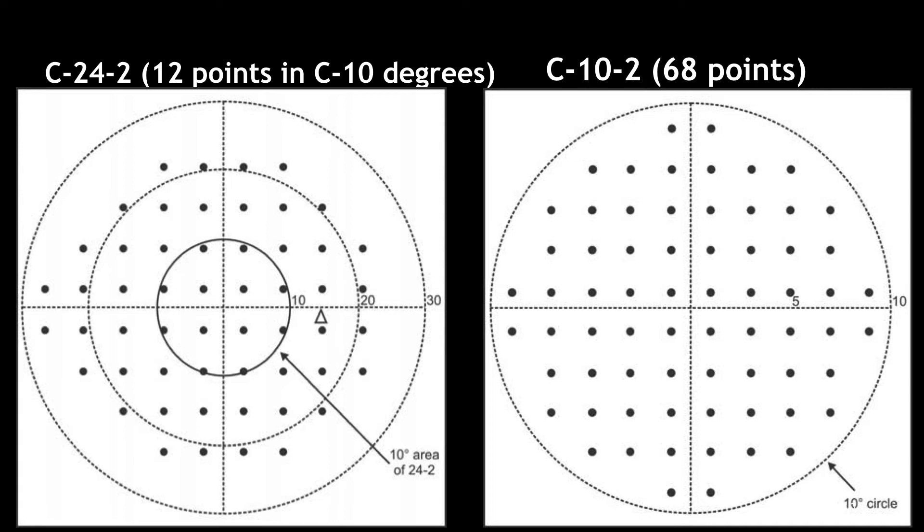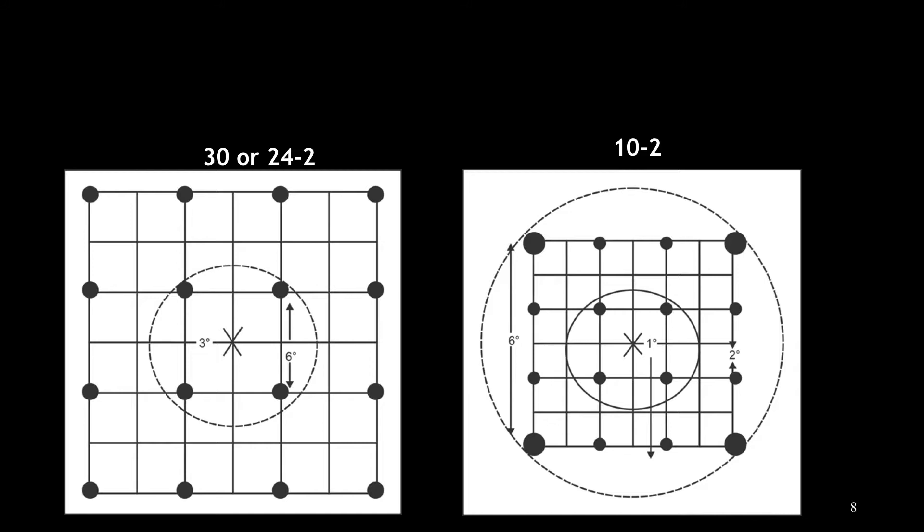In 30 and 24-2 at the central 10 degrees, we have only 12 points. But if we check 10-2 central degrees, we are checking 68 points.